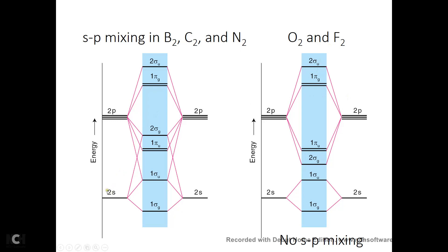The 2s can indeed form head-to-head interaction with the 2pz. The key change is that the 2 sigma-G now sits on top of the 2 pi-U. So when you put electrons in the MOs, make sure you fill the pi orbitals before going to 2 sigma-G. In boron-2, there are only three valence electrons per atom — so two here and two here for the 2s, and then one here and one here for the P electrons. The two 2s electrons give a bond order of zero from the 2s interaction.